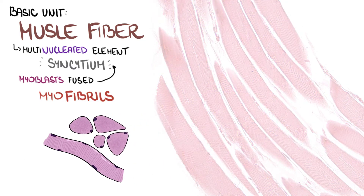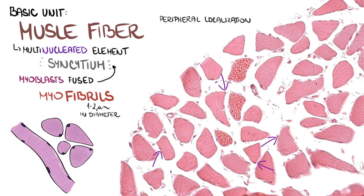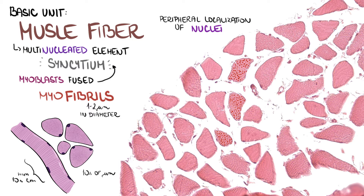Cross sections of myofibrils resemble small eosinophilic dots within muscle fibers, one to two micrometers in diameter. We can appreciate peripheral localization of nuclei in cross sections as well. Length of muscle fibers ranges from millimeters to tens of centimeters — just imagine how long your biceps is. On the other hand, the diameter is much smaller, just tens of micrometers.